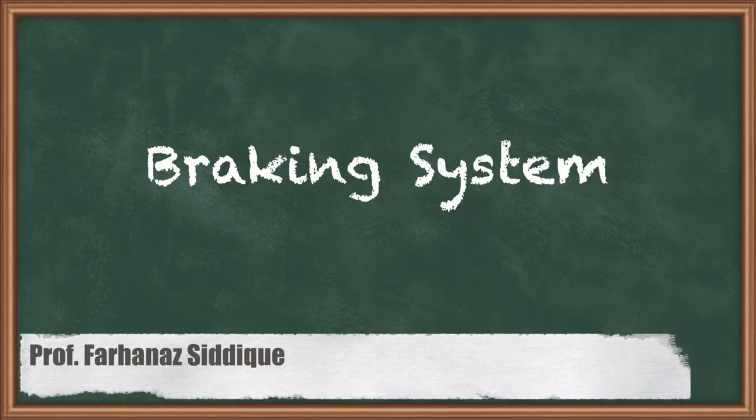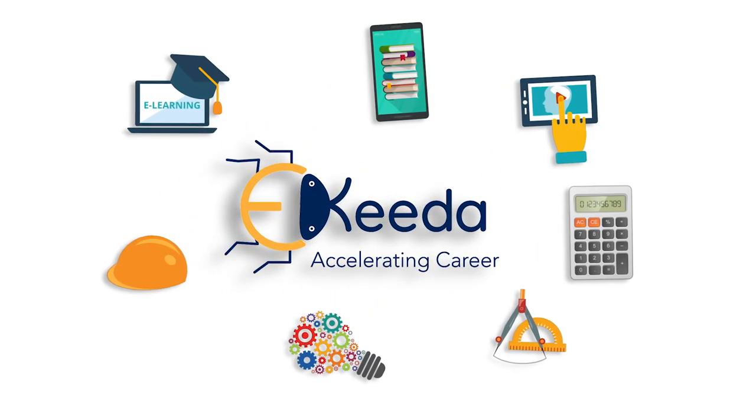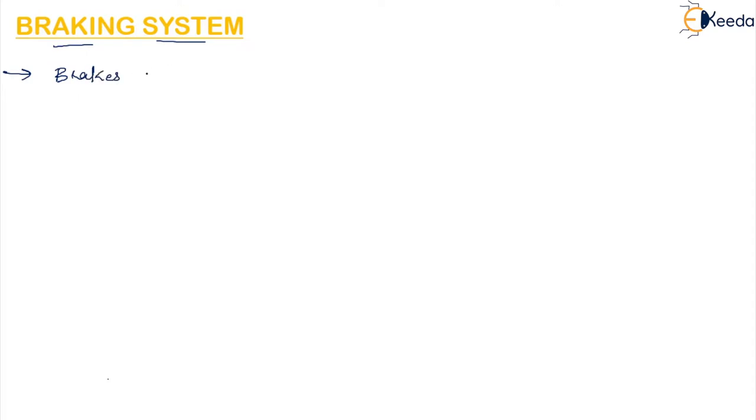Hello students, today we will learn about the braking system. Brakes are used to slow down or to stop the motion of a moving member whenever required. Brakes can be used to stop the vehicle completely or to slow down the motion of the moving member whenever needed.